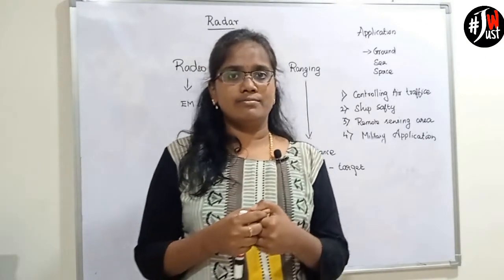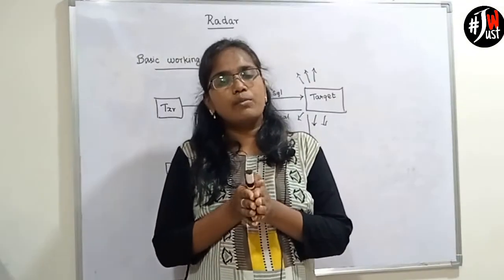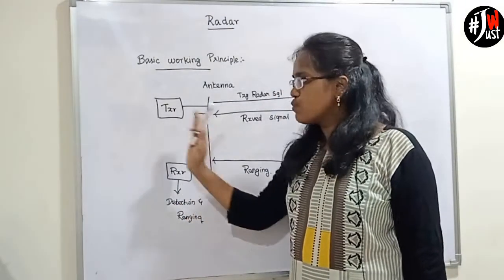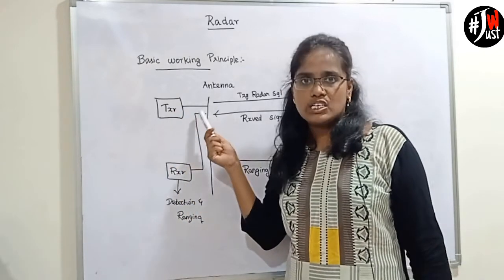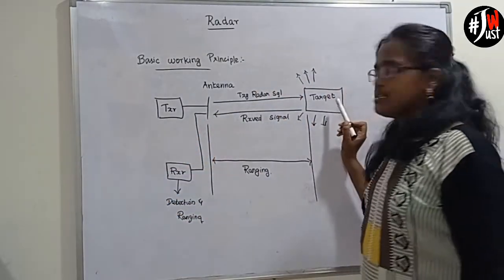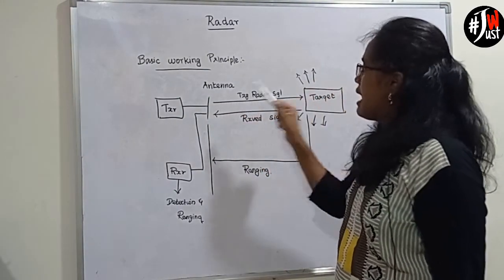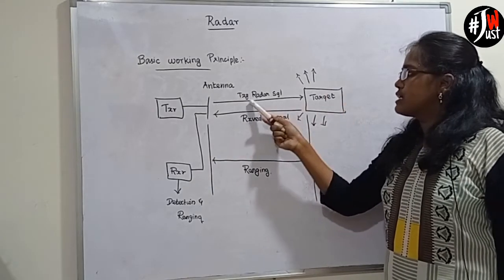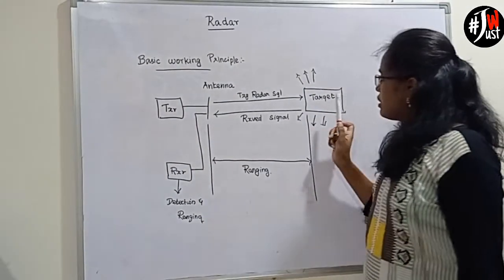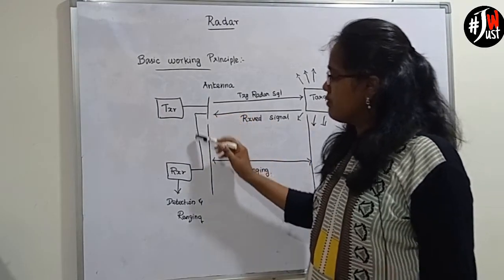What is the basic working principle of radar? Now I am going to explain the block diagram of radar. Radar consists of one transmitter and one receiver. Both the transmitter and receiver share the same antenna for transmitting and receiving an electromagnetic signal. The transmitter generates an electromagnetic signal. This signal is transmitted through the antenna. The target receives the electromagnetic signal and radiates the signal into various directions. The signal directed towards the antenna is received by it.